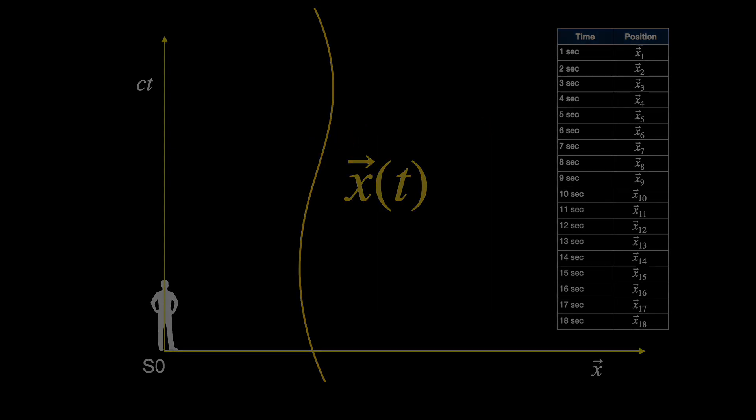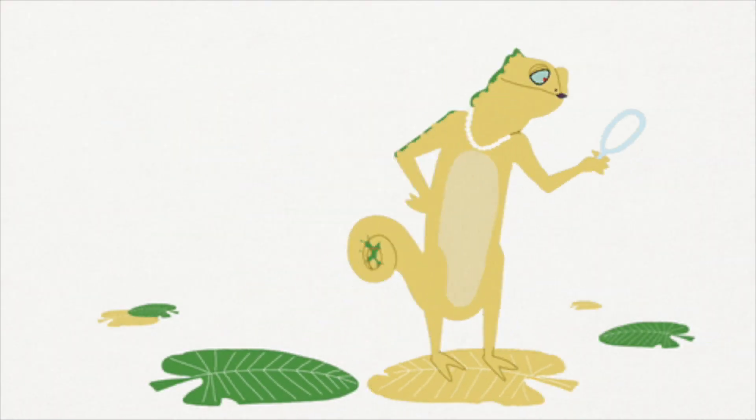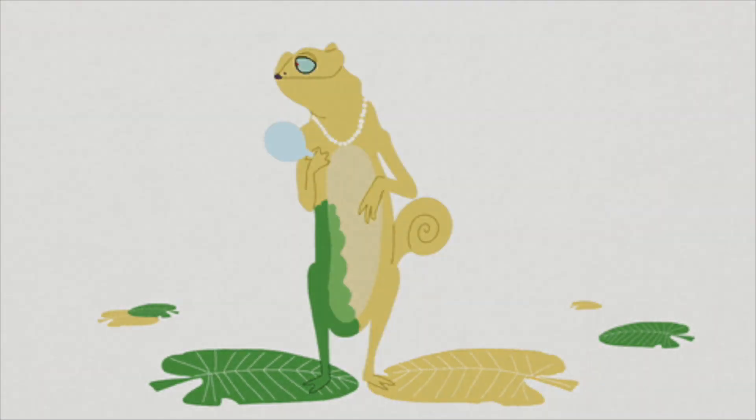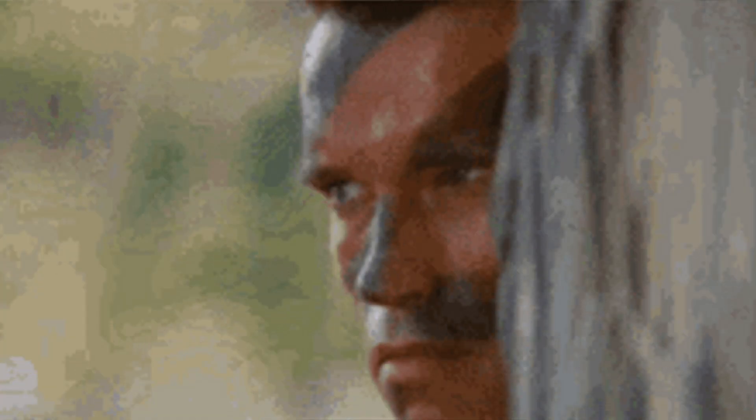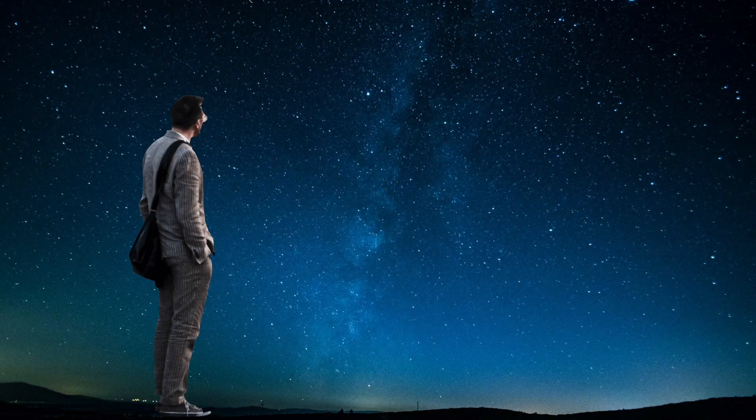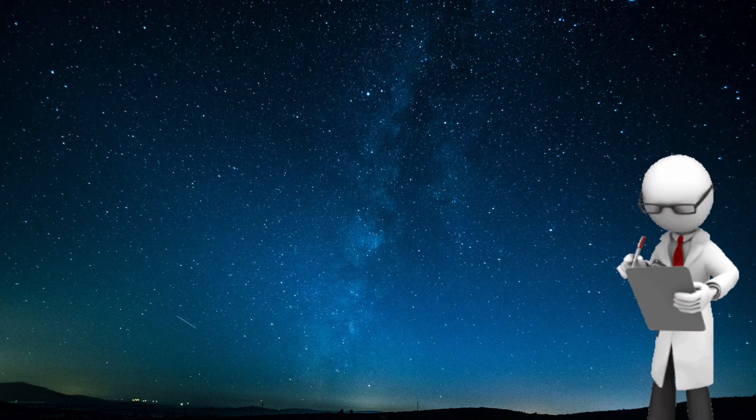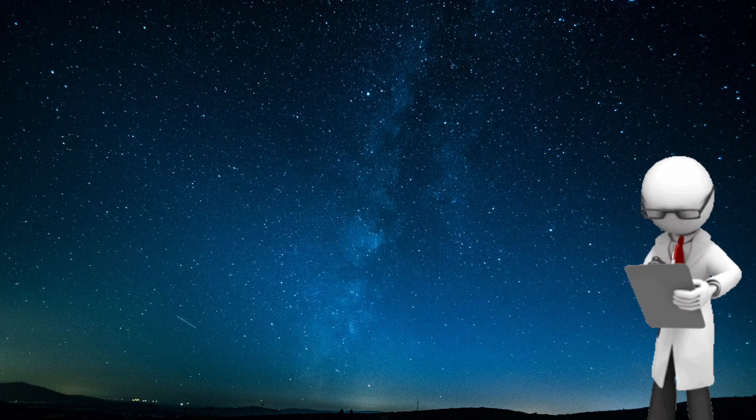Now we obviously do not want to spend all our lives observing objects. We would rather observe them for a while, long enough to gather data on its position and velocity. With these two data, we can apply Newton's law to calculate and predict the object's future course of motion.